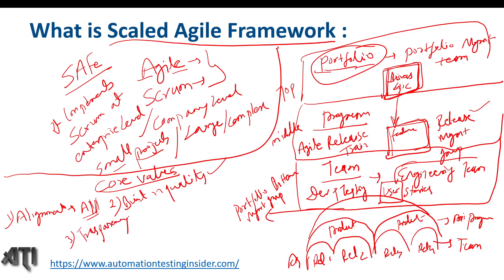The third core value is Transparency. All levels should be transparent — discussing the business value of the company and current business scenarios, as well as upcoming projects within the organization. The fourth core value is Program Execution, which is the heart of the Scaled Agile Framework. It's about how to deliver software to the customer, the actual releasing of the software, and what value we are adding to the business.